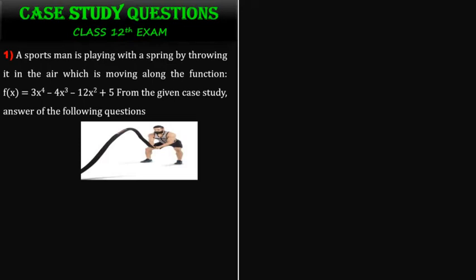Question number 1. We are learning about a force man playing with a spring through the air — it is moving with functions. Given f(x) = 3x⁴ - 4x³ - 12x² + 5.